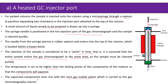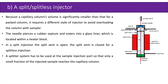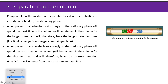Another injector system is the split/splitless injector. Because the capillary column's volume is significantly smaller than that for a packed column, it requires a different style of injector to avoid overloading the column with sample. The needle pierces a rubber septum and enters a glass liner within a heater block. In a split injection, the split vent is open; for a splitless injection, the split vent is closed. A splitter system ensures that only a small fraction of the injected sample reaches the capillary column.